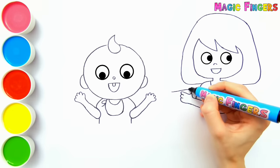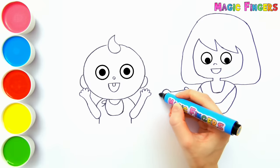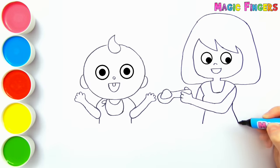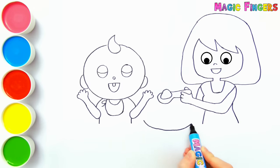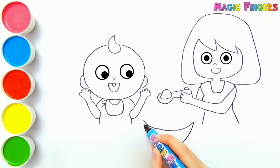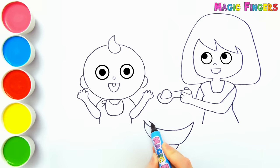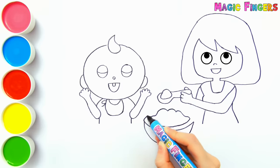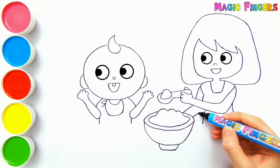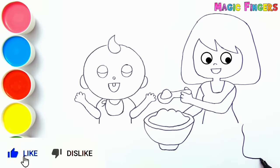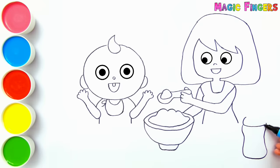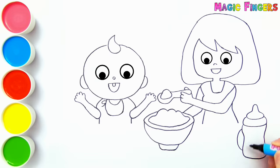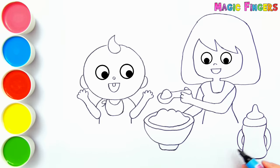Let's draw the spoon. And I'm drawing a bowl. There is baby food in it. Let's draw the feeding bottle here. And the pacifier.